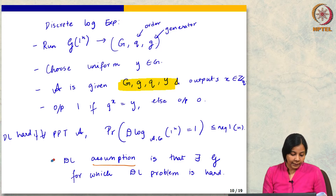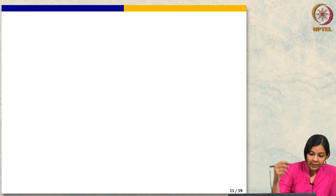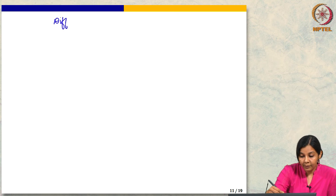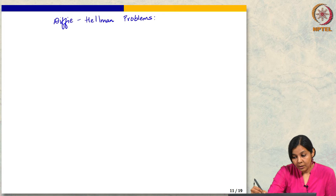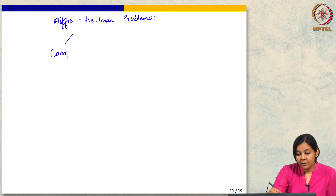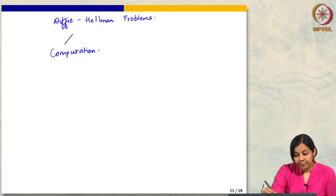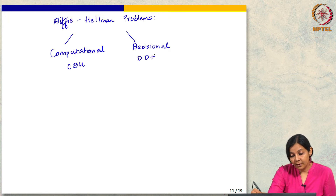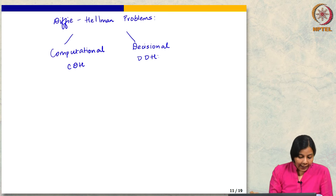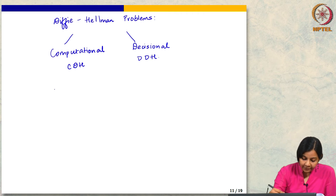Let me also quickly define the Diffie-Hellman problems. There is a computational version — called Computational Diffie-Hellman — and there is a decisional version, called Decisional Diffie-Hellman.